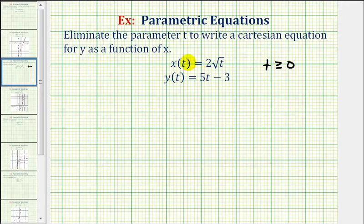Next, let's go ahead and rewrite these equations as x equals two square root t and y equals five t minus three. So because we want an equation for y as a function of x, we want to solve the first equation for t and then perform a substitution into the second equation.